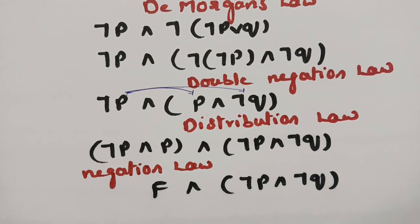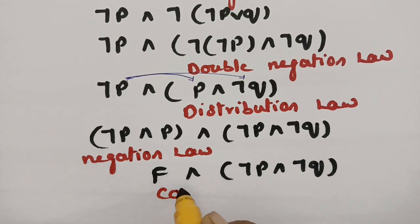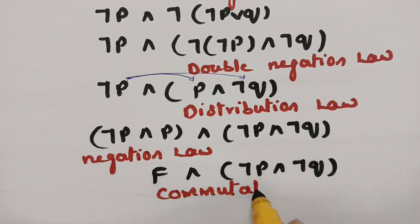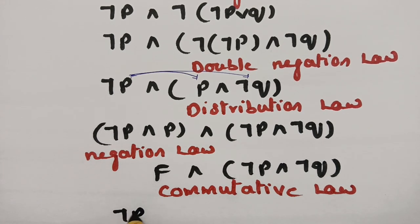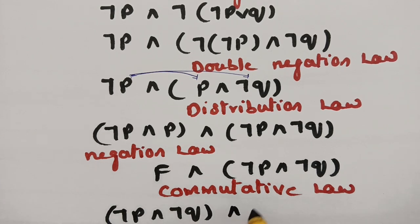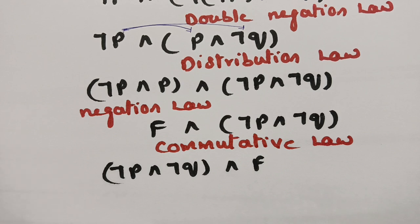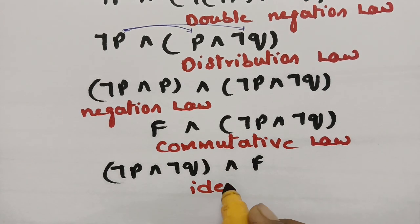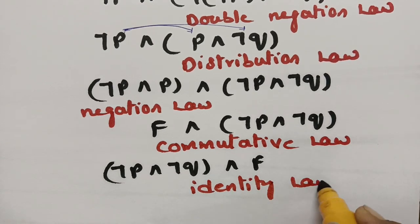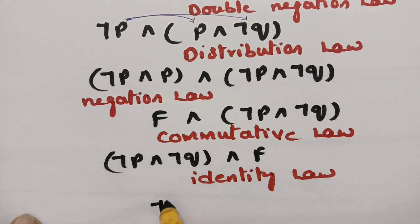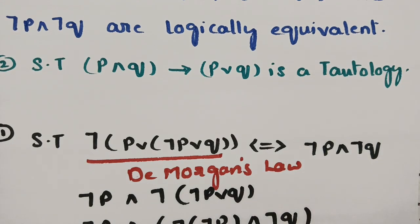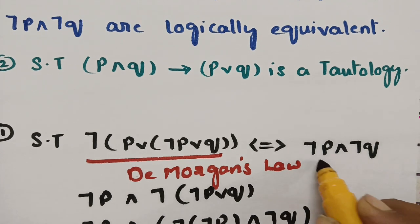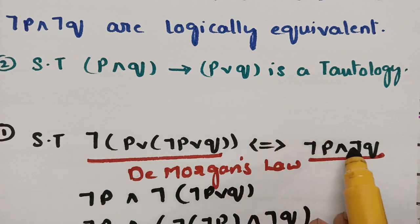Now I apply the commutative law — A and B equals B and A — to rewrite as: (negation P and negation Q) or false. Then applying the identity law, this simplifies to: negation P and negation Q. This is exactly the RHS. I have taken the LHS and shown it equals the RHS, therefore these two statements are logically equivalent.